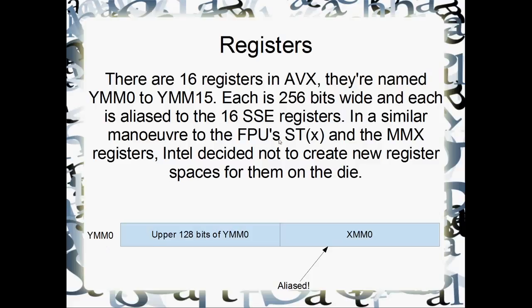This is exactly the same way that the x87 ST0 through ST7 registers were aliased to the MMX registers. In a similar move, Intel decided not to create new register space on the actual CPU, but instead to alias the AVX registers to the SSE registers.